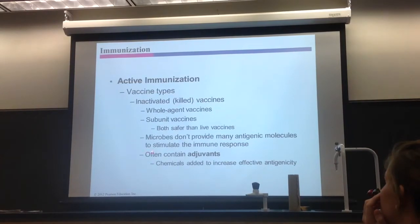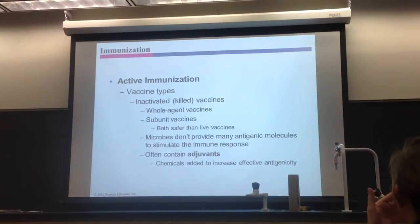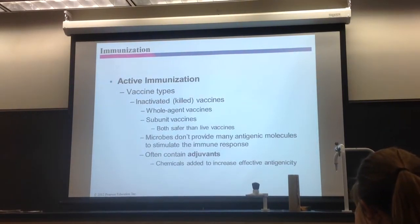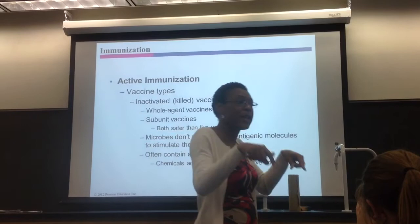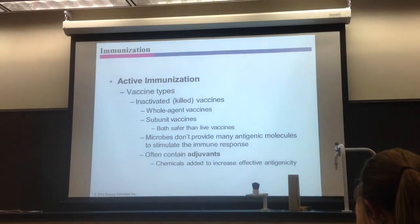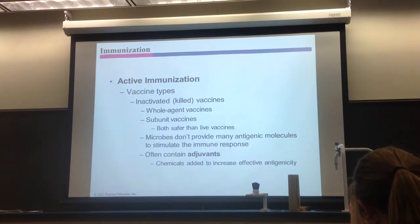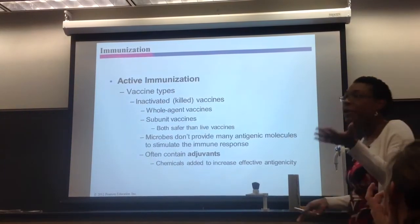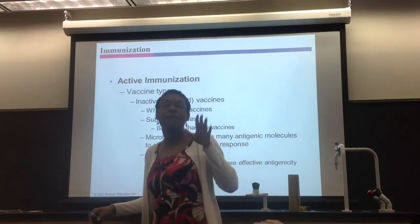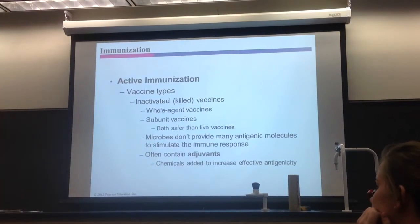Because inactivated vaccines don't stimulate a strong immune response, sometimes they contain adjuvants — chemicals that help stimulate your immune response. The vaccine information sheet will tell you whether your vaccine has an adjuvant. Sometimes bad reactions may be due to the adjuvants rather than the vaccine itself, so it's important to know what's in your vaccine.